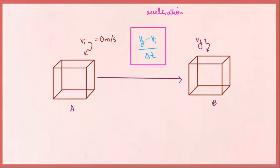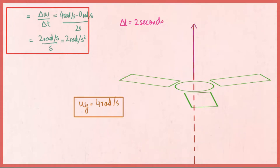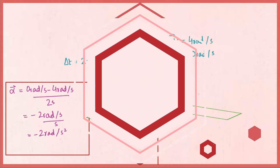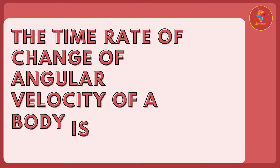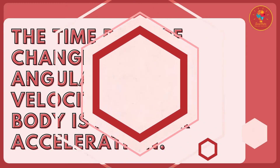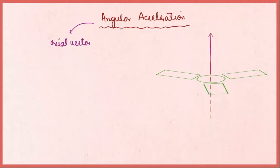Like linear acceleration, angular acceleration is also a vector quantity. Its direction is along the direction of angular velocity if angular velocity is increasing. Conversely, if the angular velocity is decreasing, then the angular acceleration is opposite to the direction of angular velocity. Angular acceleration is an axial vector, meaning it always acts along the axis of rotation.